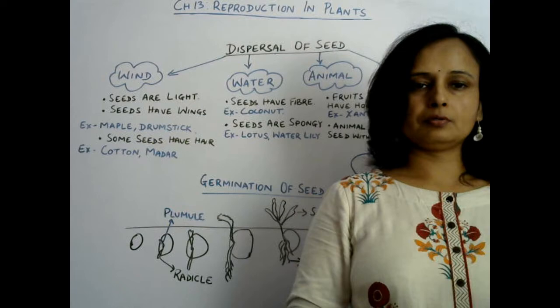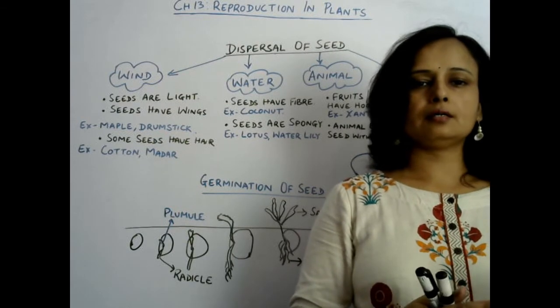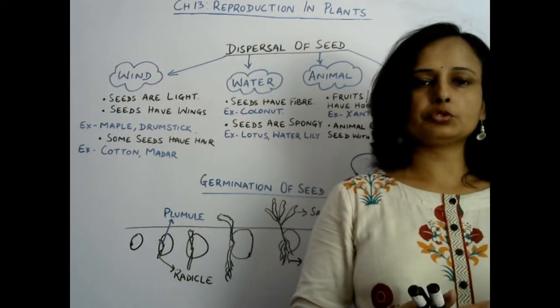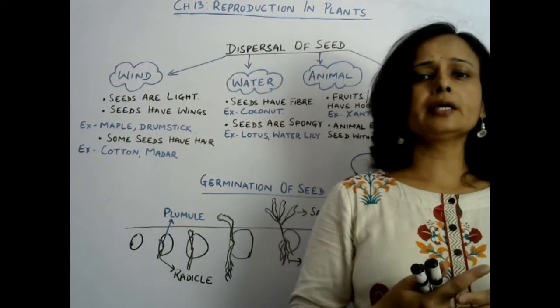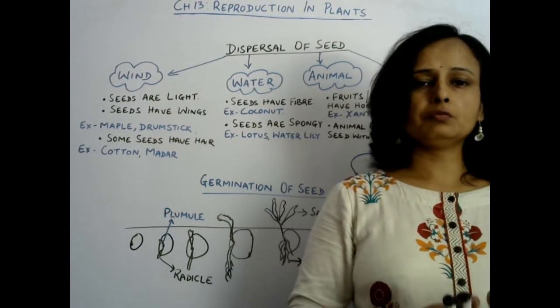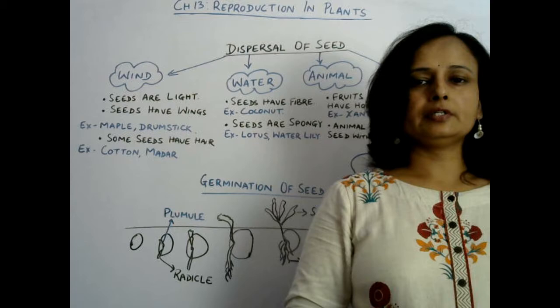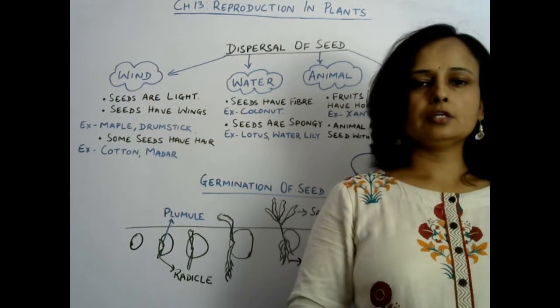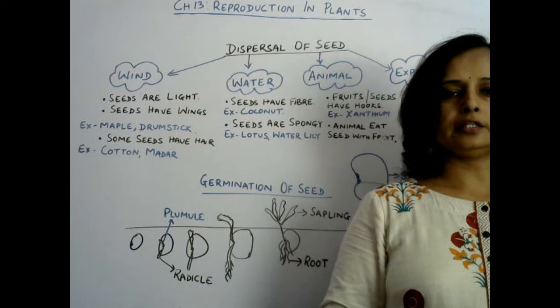Next one, some seeds of water plants are spongy. Due to that, they can easily float on water and be carried to different distant places. Such examples are lotus and water lily.